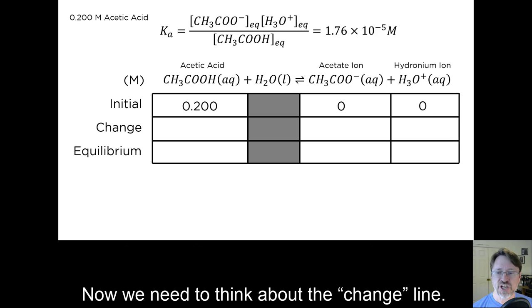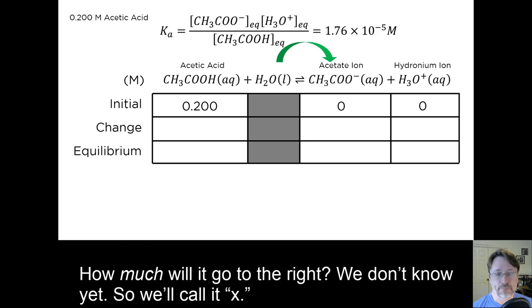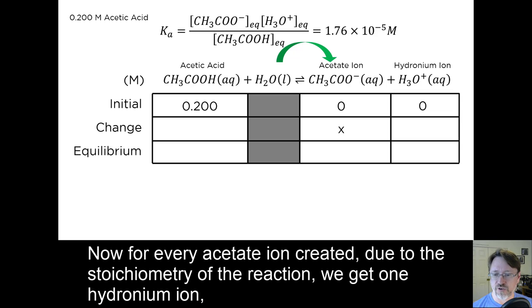Now we need to think about the change line. Clearly, if we are starting with concentrations of 0 for the products, the only direction the reaction can go is to the right. How much will it go to the right? We don't know yet, so we'll call it x.